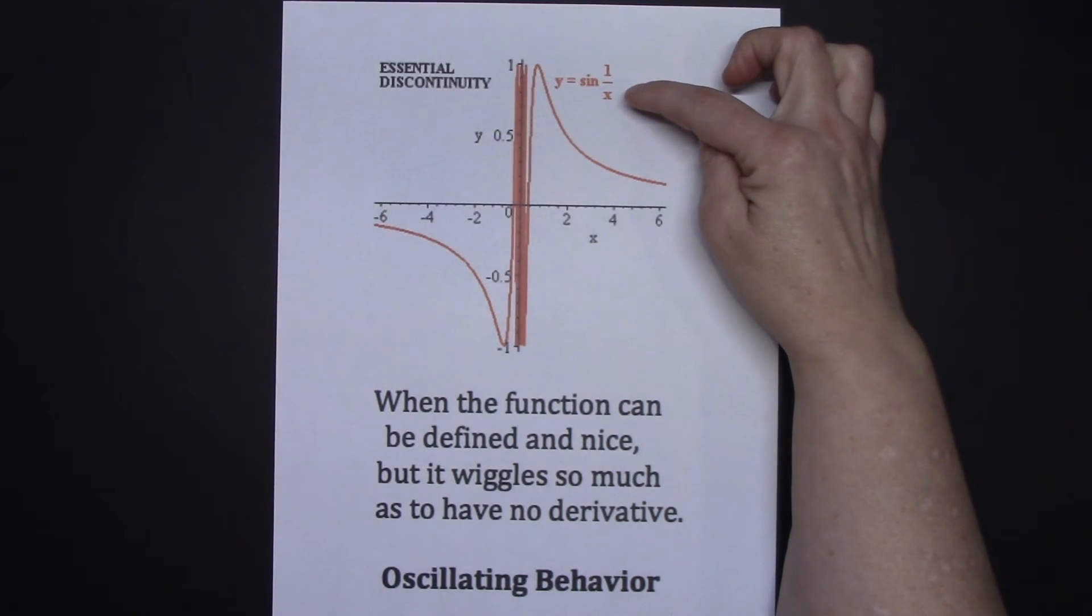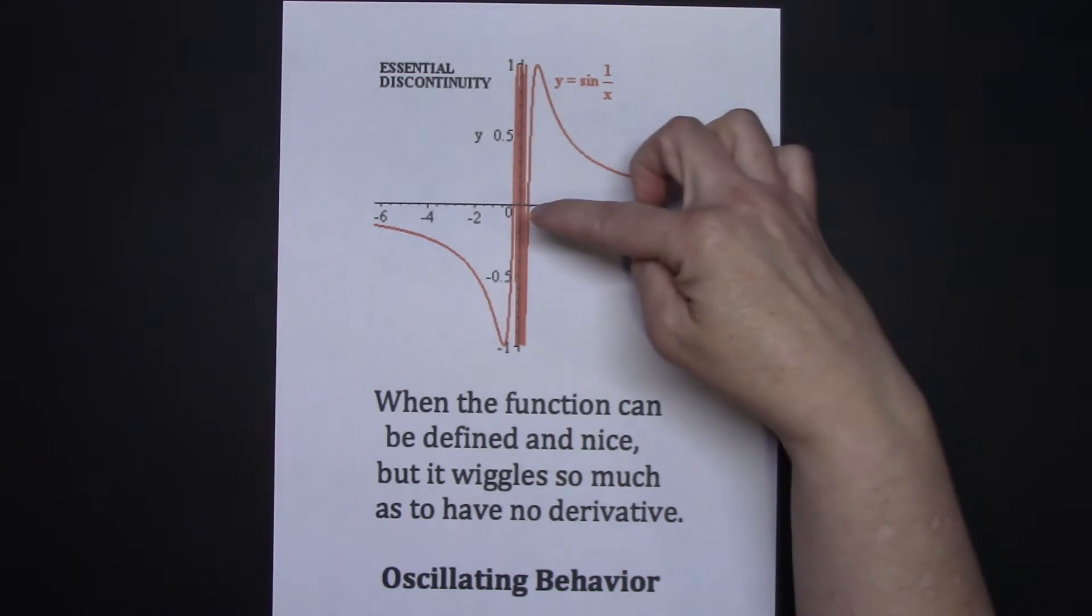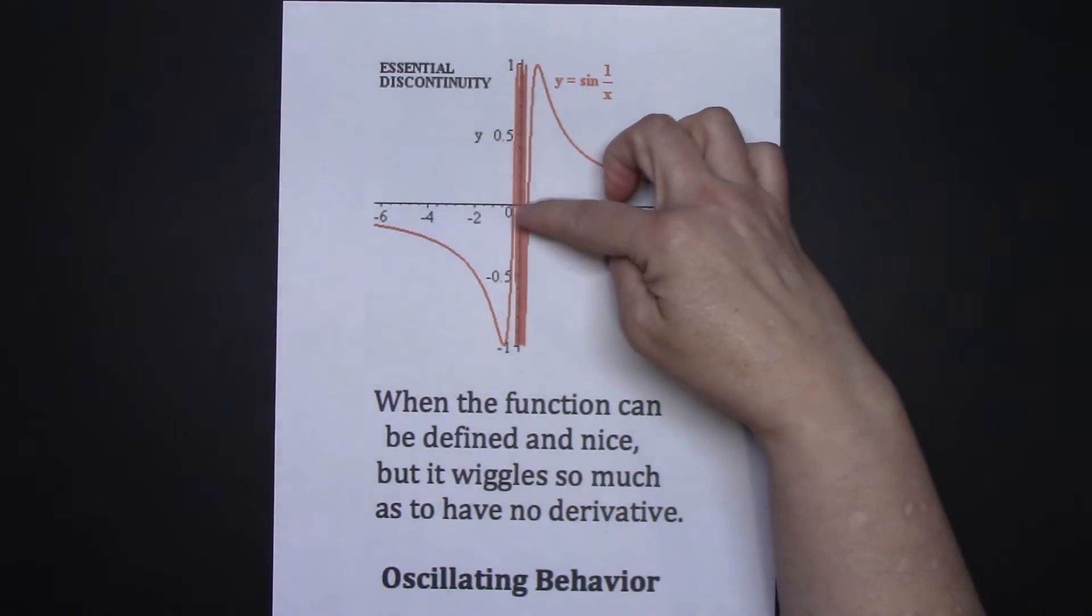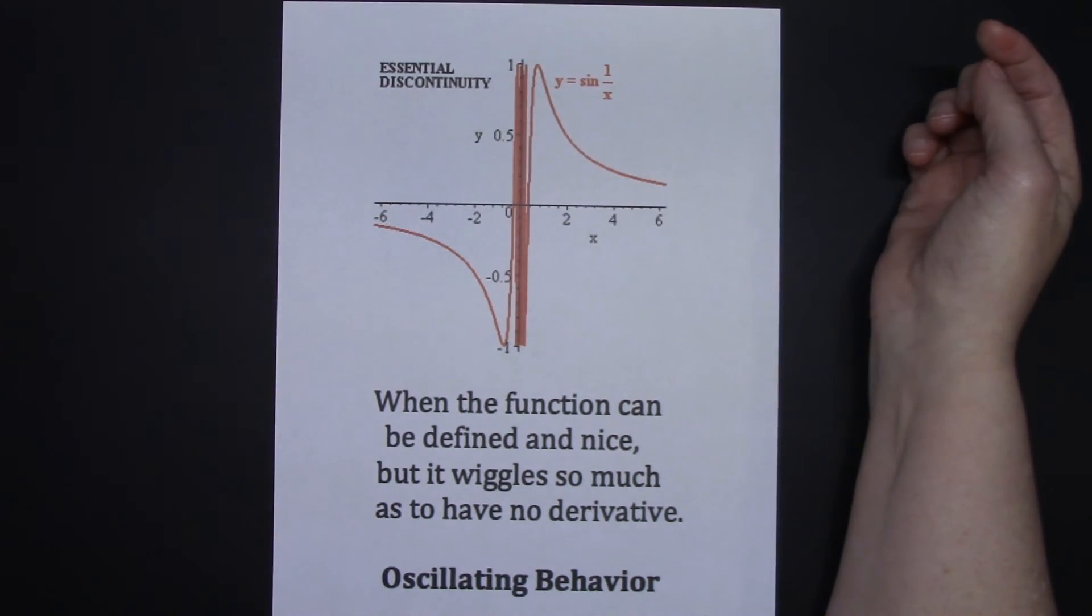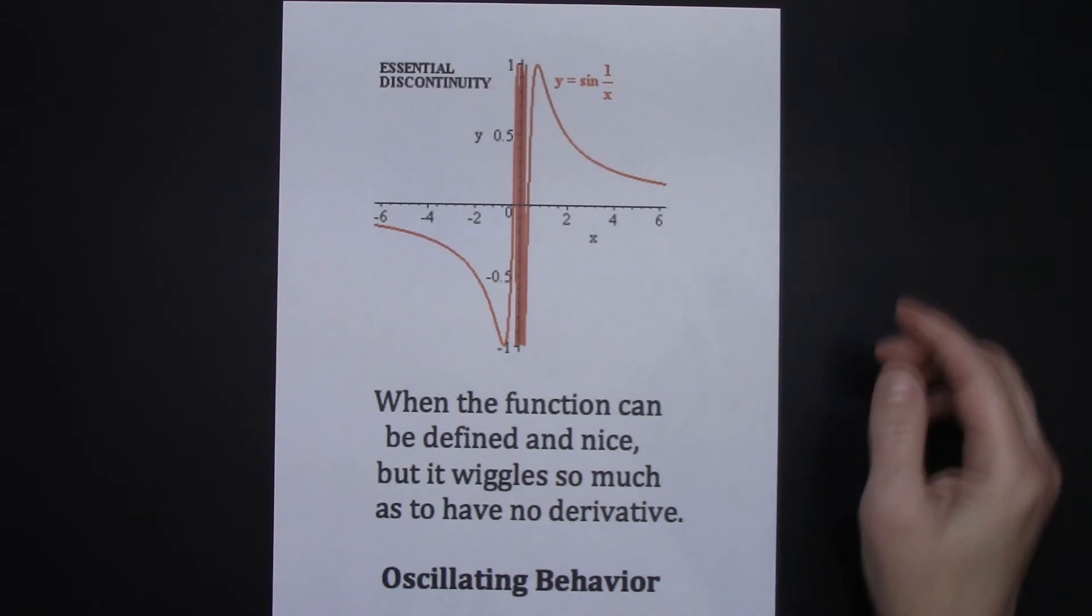So the function y equals sine of 1 over x is pictured here. And we've got the oscillating behavior occurring as we approach 0. So therefore, at x equals 0, the derivative does not exist because of the oscillating behavior.